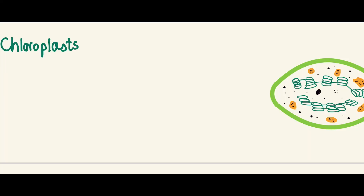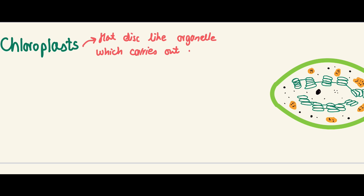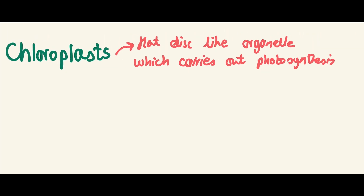To define chloroplasts with a textbook definition: it's just a flat disc-like organelle which carries out photosynthesis. We've been talking about photosynthesis from grade two, so we know what photosynthesis is.